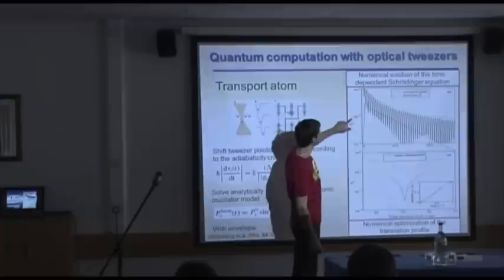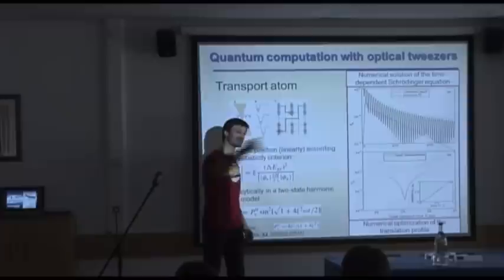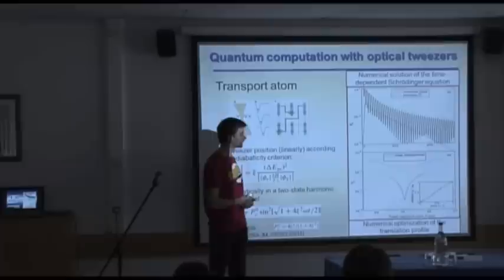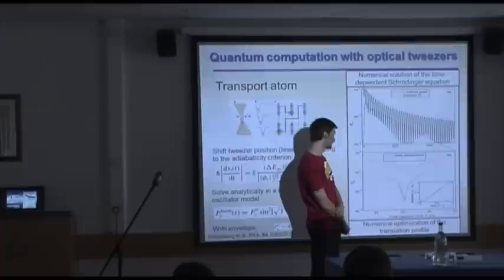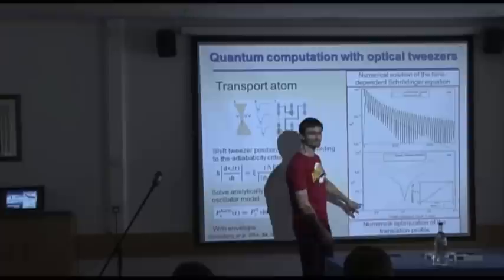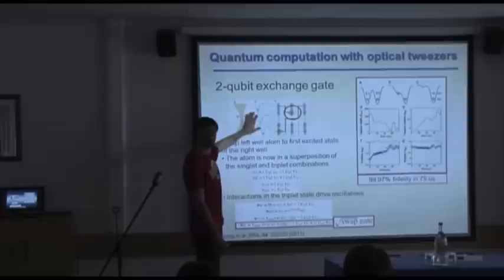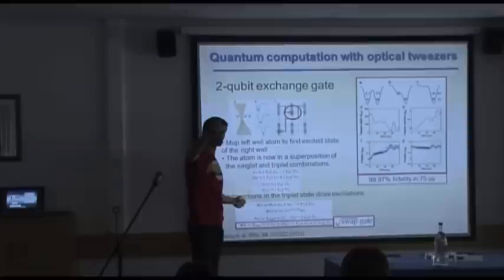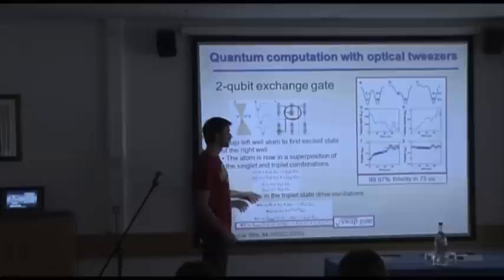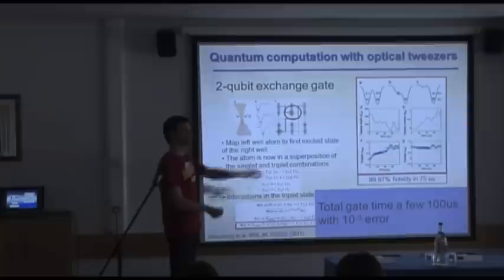Instead of moving linearly, we defined a parameter space where we can move it non-linearly, then did numerical optimization on that. A very simple numerical optimization gave us minima at error probabilities of 10⁻⁴ to 10⁻⁵. We did almost the same for the two-qubit gate: pick up an atom, treat the interaction correctly, optimize these paths, and get high fidelity in very low time. Overall, we can make fast gates with low error probability — which was good news.